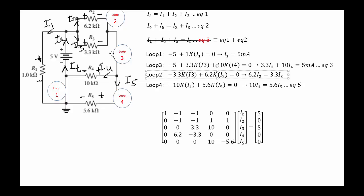Loop three starts from here and goes around: minus 5 + I3 × 3.3 + I3 × 3.3 + I4 × 10 = 0. Dividing by k, we get 3.3·I3 + 10·I4 = 5 mA. Then loop four, starting from here and going around, gives us another equation for the remaining unknowns.